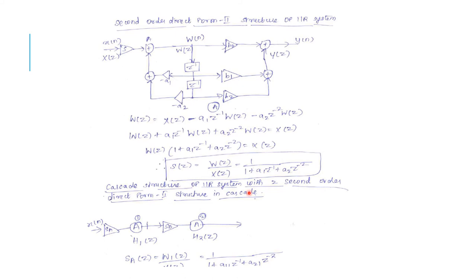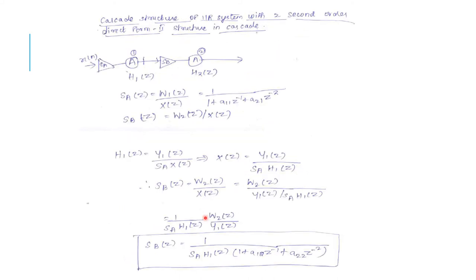Another way to represent a second order system is the cascade structure of an IIR system with two second order direct form 2 structures in cascade. Two structures can be cascaded, and the scaling factors can be obtained as: S_a(z) equals W(z) divided by X(z), and S_b(z) equals W_2(z) divided by X(z). H_1(z) equals Y_1(z) divided by (s_a times X(z)). Using the coefficients obtained, we get S_b(z).